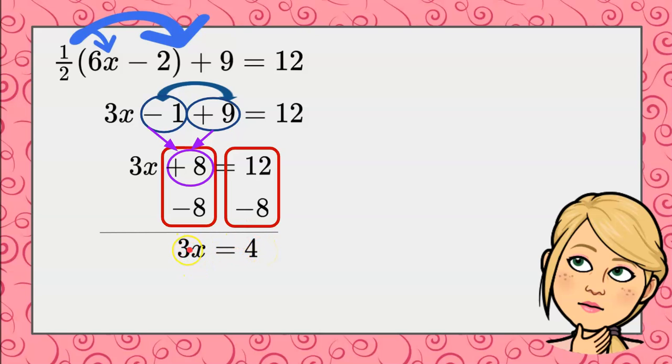To get solved for x, I'm going to undo multiply by 3 by using inverse operations and the division property of equality and divide both sides by 3. 3 divided by 3 is 1, giving me a solution of 4 thirds.